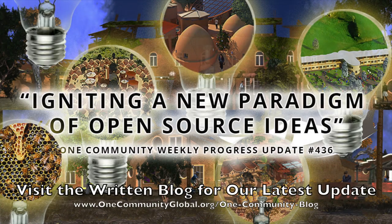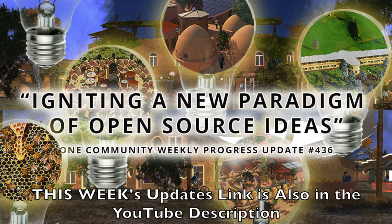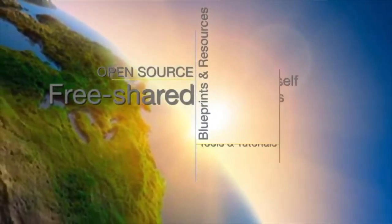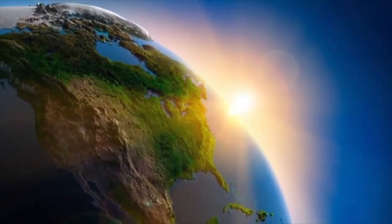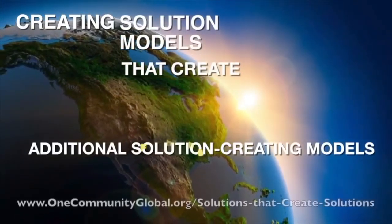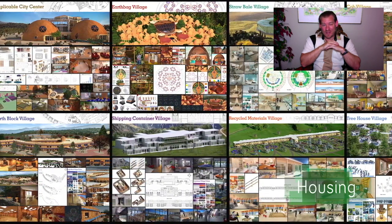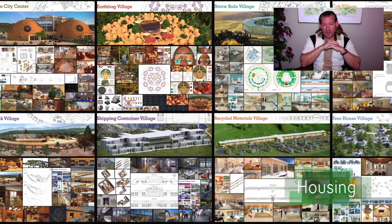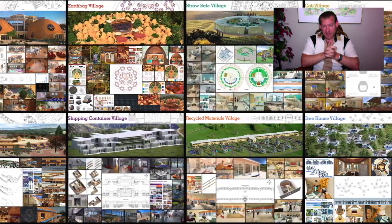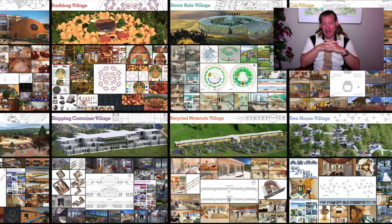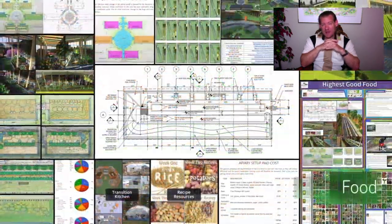Igniting a New Paradigm of Open Source Ideas — One Community Weekly Progress Update, number 436. One Community is a 501c3 non-profit organization creating open source and free shared blueprints, resources, tools, tutorials, and do-it-yourself instructions for highest good living. My name is Jay Sabel and I'm the Executive Director. This is our August 1st, 2021 edition of our Weekly Progress Update, and today's topic is Igniting a New Paradigm of Open Source Ideas.